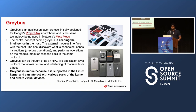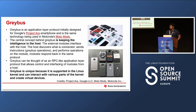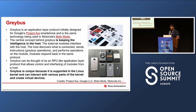Greybus is an application layer protocol developed as part of Google's Project Ara modular smartphone. The idea was that you would have a base module with a minimal set of features — processors and so on — and then multiple modules like camera modules, display modules, and speakers. You would be able to customize your phone as per your requirements, and the underlying software architecture that helps with enumeration and working of these modules is Greybus.